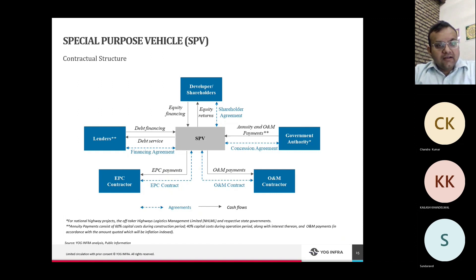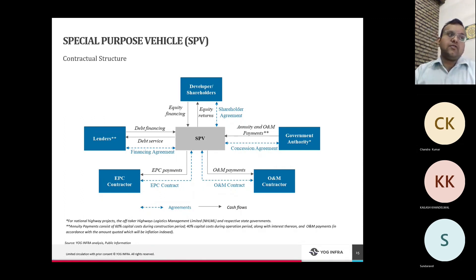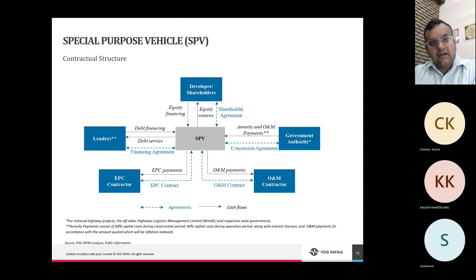A typical ropeway PPP SPV structure includes: annuity and O&M payments from the government authority (NHLML as offtaker — 60% during construction, 40% during operations); equity financing from developers/shareholders; debt financing from lenders; an EPC contractor; and an O&M contractor. For ropeway RFPs, there is a mandatory MOU or long-term agreement with an Original Equipment Manufacturer, who is responsible for maintenance of the project throughout the concession period.